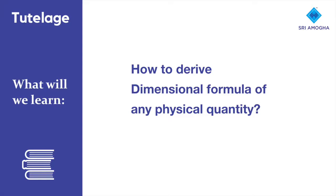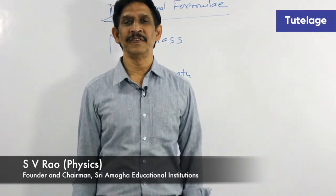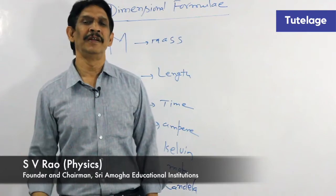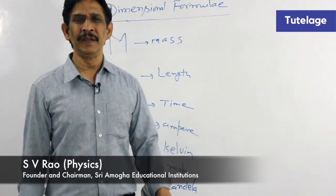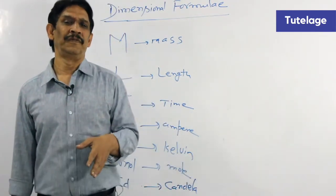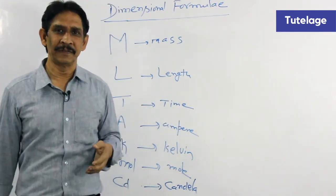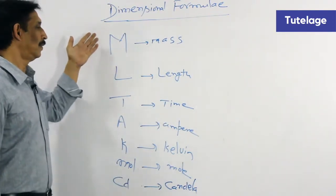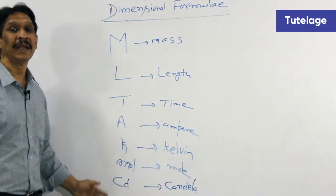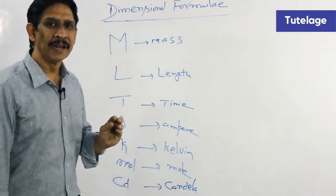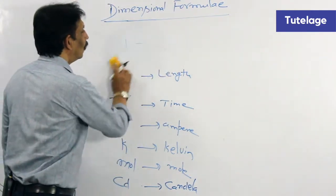Today we shall learn the dimensional formulae of different physical quantities in a very easy method by knowing the fundamental formulae of those physical quantities. Dimensional formulae are used to obtain the unit of a physical quantity and we express the dimensional formulae in terms of fundamental quantities like mass, length, time, ampere, kelvin, mole, and candela. Let us go for some examples.